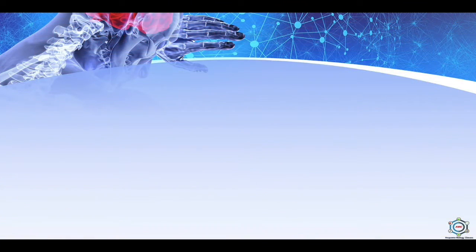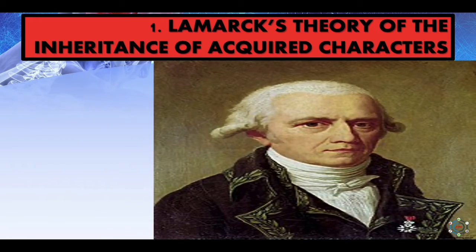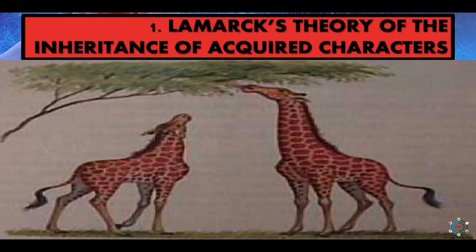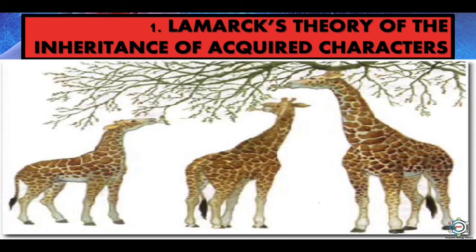Our first theory is Lamarck's theory of the inheritance of acquired characters. This theory was put forward by the well-known French biologist Cavalier de Lamarck, explained in his famous book Philosophie Zoologique in 1809. Lamarck was in charge of the invertebrate collection at the Natural History Museum in Paris. Through systematic studies, he became convinced that species were not fixed but were derived from pre-existing species by modification. This idea conflicted with views of special creation and fixity of species prevailing at that time, so his theory was not received well.